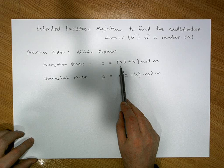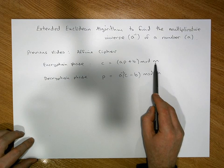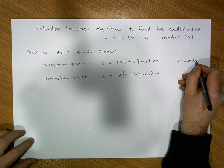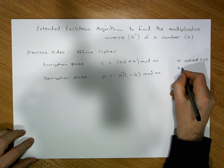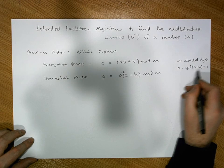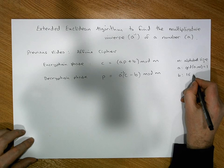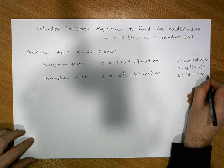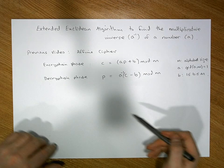In the encryption phase we had to choose three numbers. m was typically the alphabet size — in our case usually equal to 26. a was a number such that the gcd of a and m equals 1, in other words they're relatively prime. And b could be any number greater than or equal to 1 but less than or equal to m.